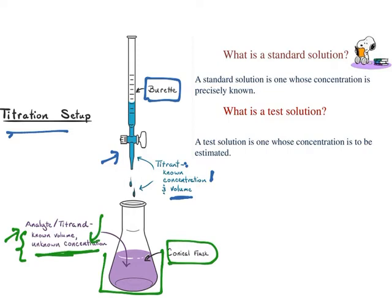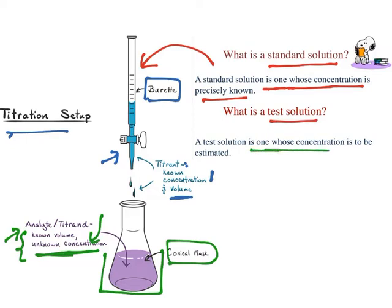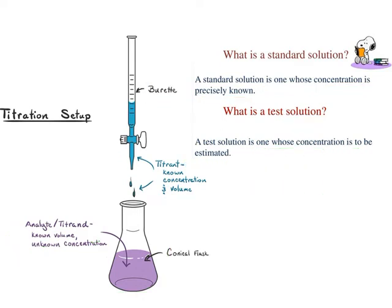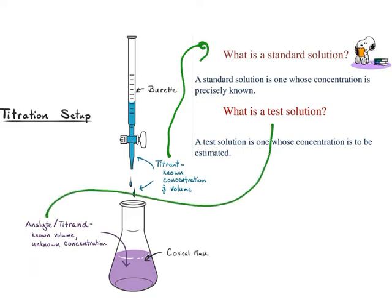Some other terminology: a standard solution is one whose concentration is precisely known. So the titrant is also known as a standard solution. A test solution is the one whose concentration is to be estimated — the analyte solution is also known as a test solution. Depending upon the textbook, the titrant is also called a standard solution, whereas the analyte is also called a test solution.